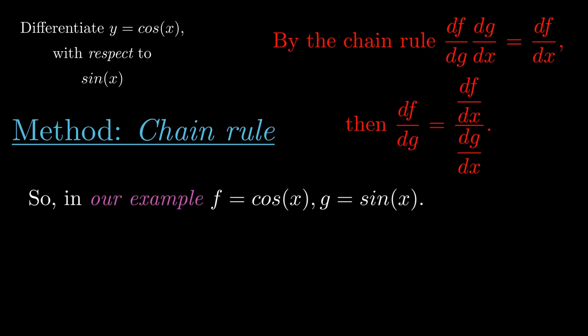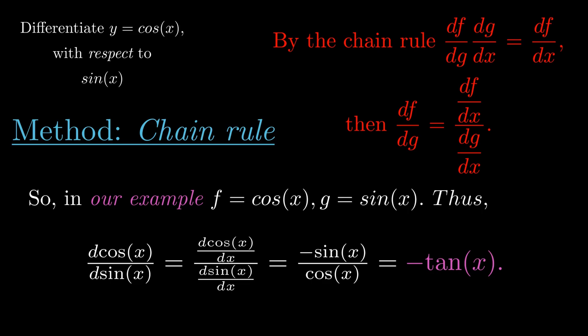In our example, f equals cosine of x and g equals sine of x. So we have the derivative of cosine of x with respect to sine of x is equal to the derivative of cosine with respect to x divided by the derivative of sine of x with respect to x.